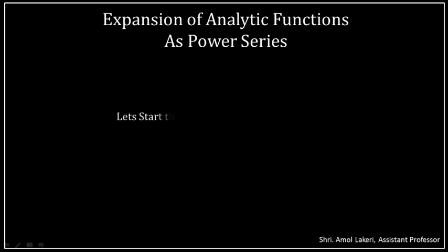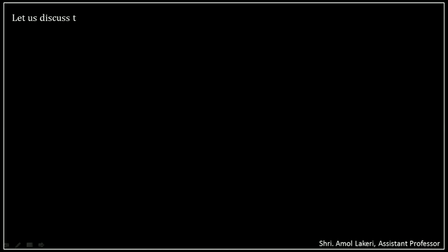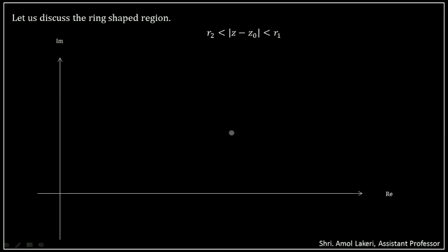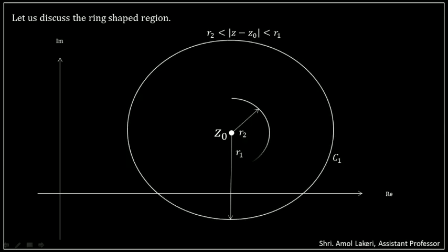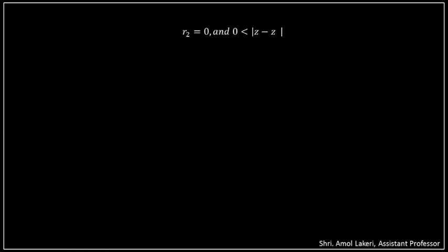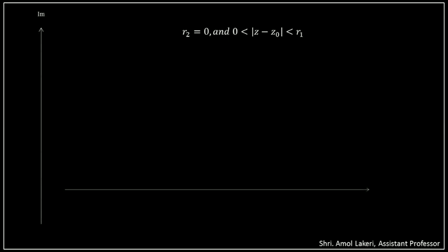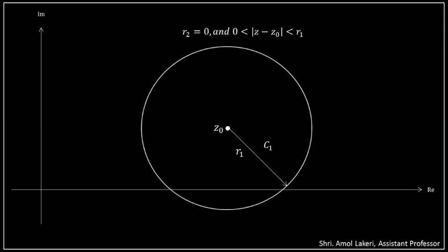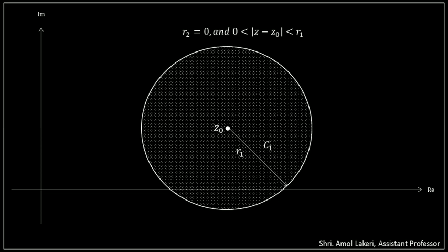Maclaurin series is a particular case of Taylor series, while Laurent series is a generalized Taylor series. Let's start the session with the ring-shaped region. It is a region bounded by two concentric circles with different radii. Z0 is the center, R1 is the radius of circle C1, and R2 is the radius of the inner circle inside C1. The region bounded by these two circles looks like a ring or annulus. If R2 equals zero, then we have all the points inside circle C1 except at center Z0.